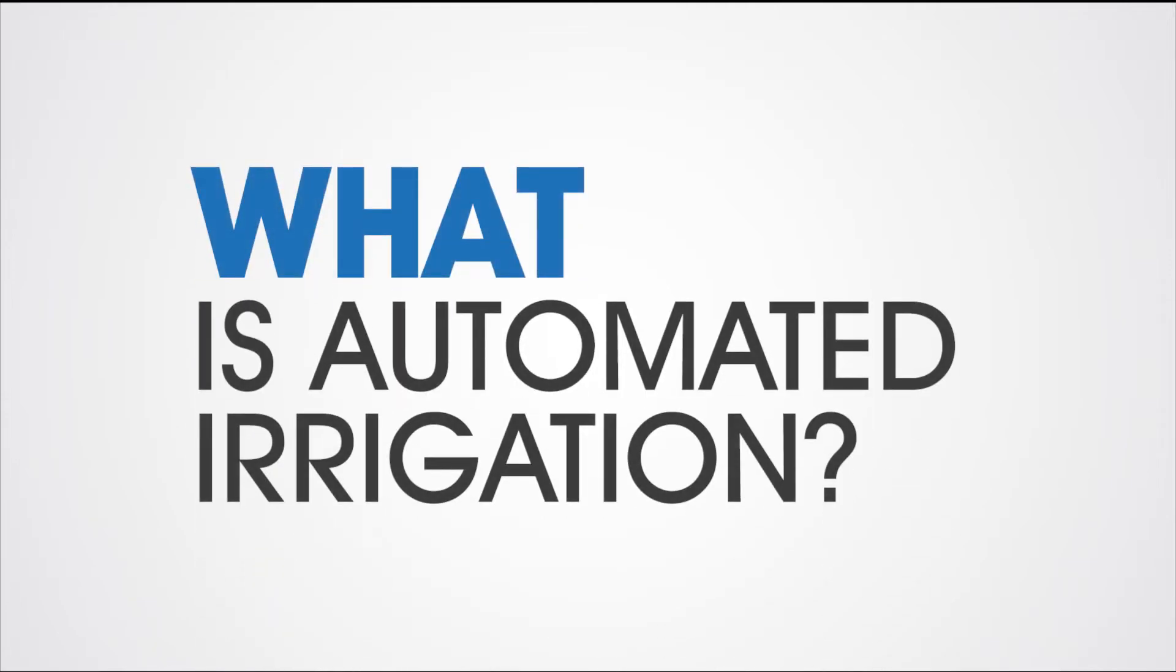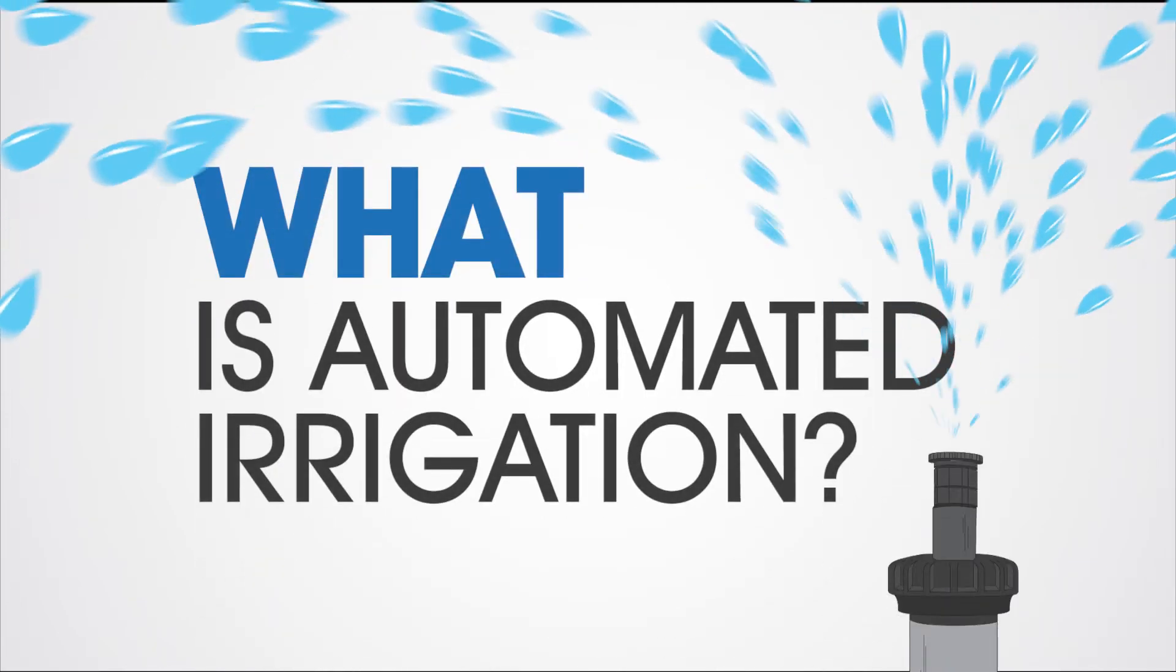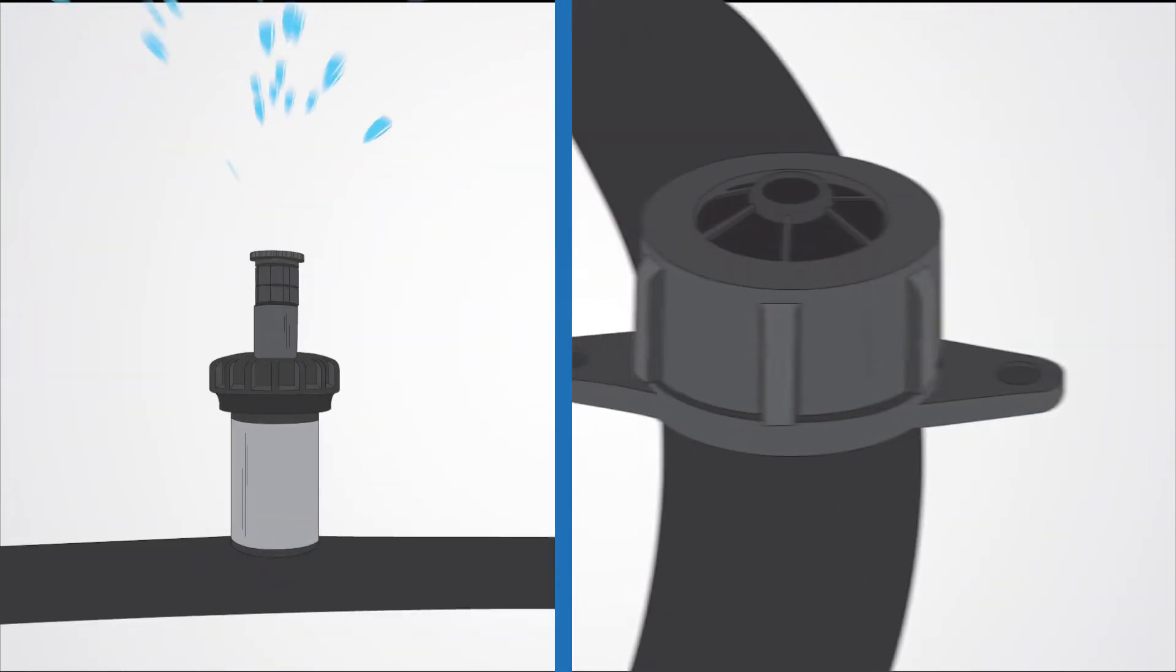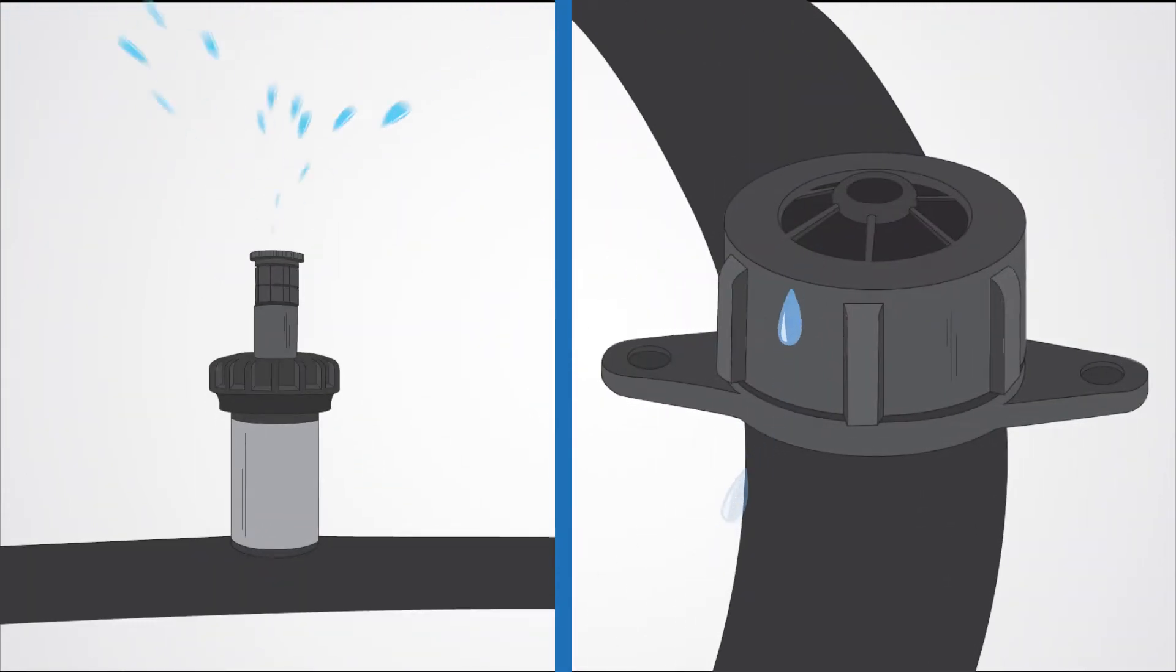What is automated irrigation? It's an automated system that controls when your garden is watered. Whether it's pop-ups or a drip system, automation means hands-free, efficient and convenient watering.